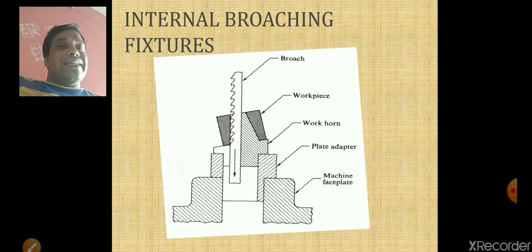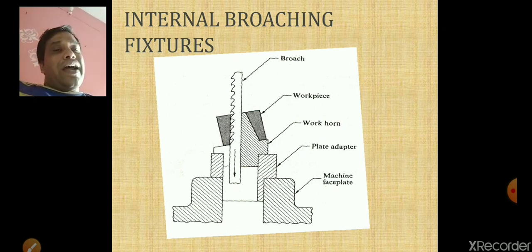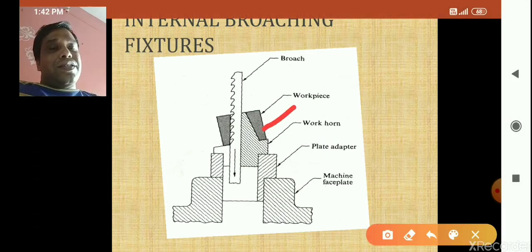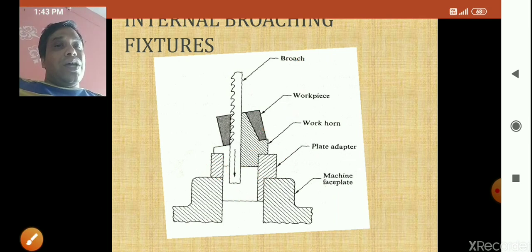Another type of internal broaching fixture: the workpiece is mounted on the work horn, the work horn is mounted on the plate adapter, and the plate adapter is mounted on the machine face plate. The fixture holds and locates the workpiece, and the broach is the cutting tool. This is an internal broaching fixture.